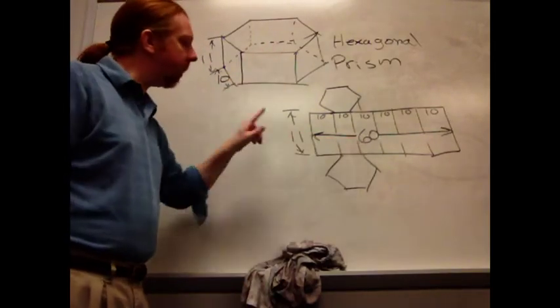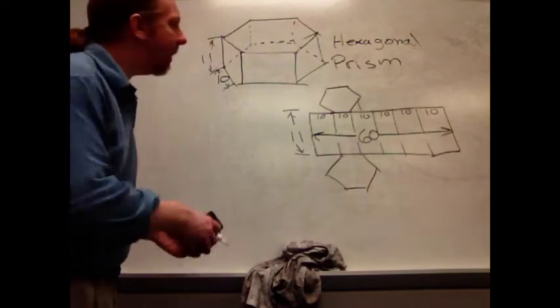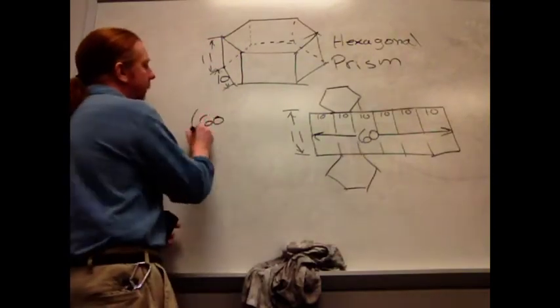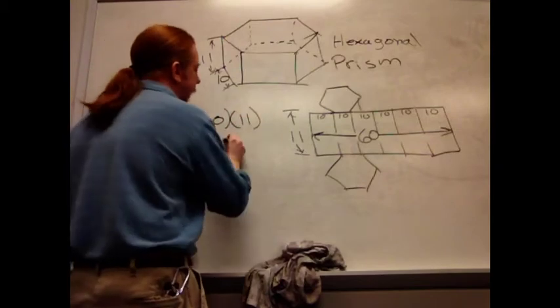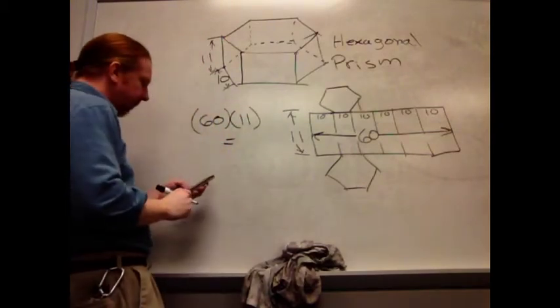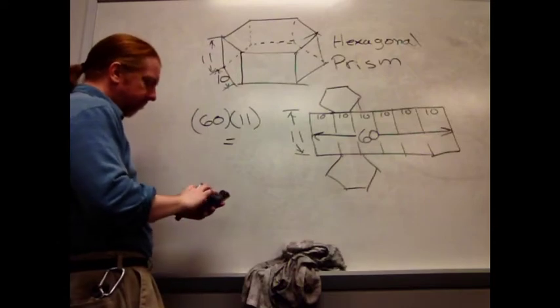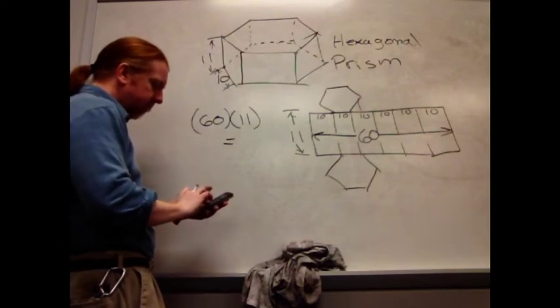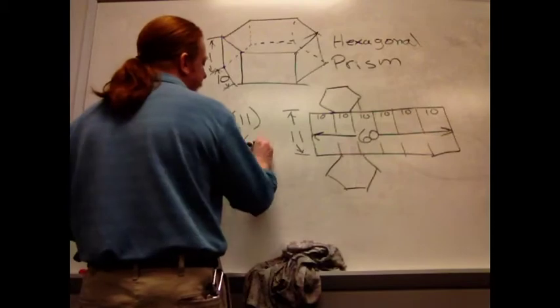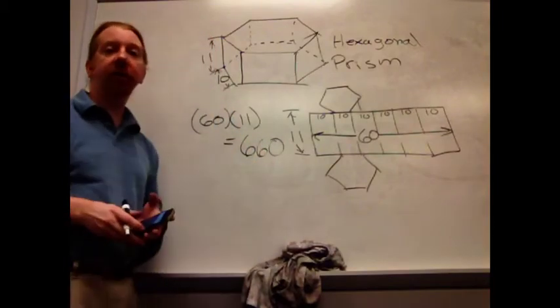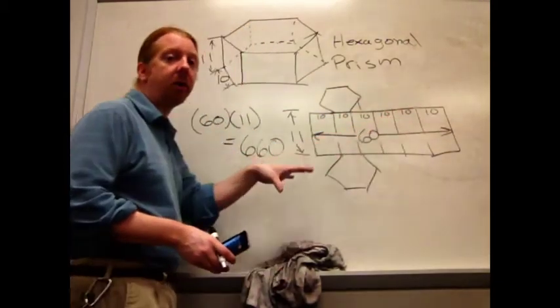So, 60, and then I've got this 11 going on. So that net area there, 60 by 11, is going to put me at, I want to say, 660, but I'm going to double check just to be sure. Yep, 660. 660 units. Now, that's that rectangle there in the middle.